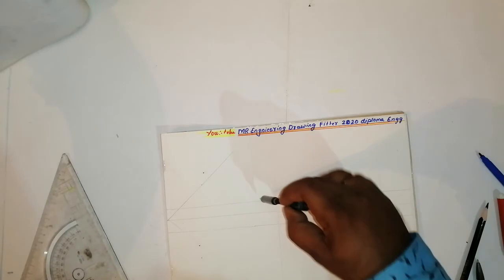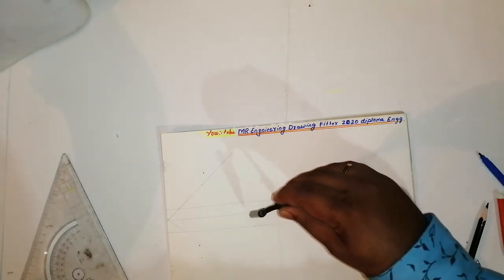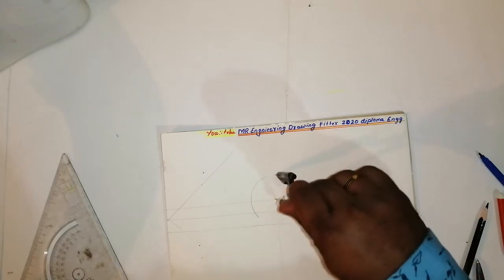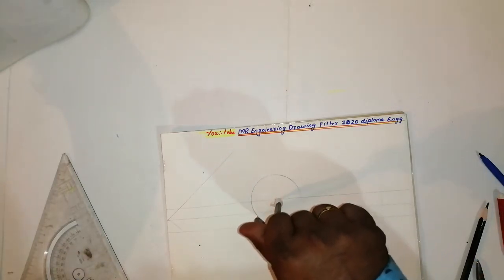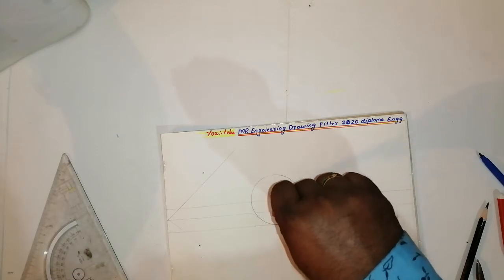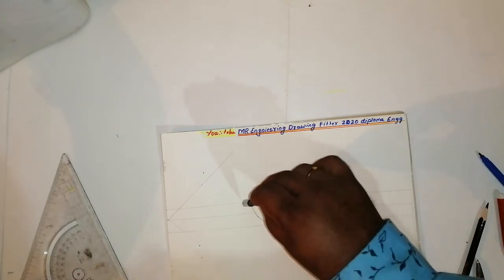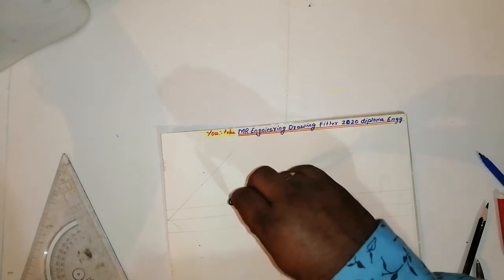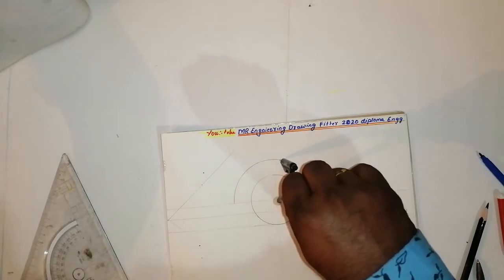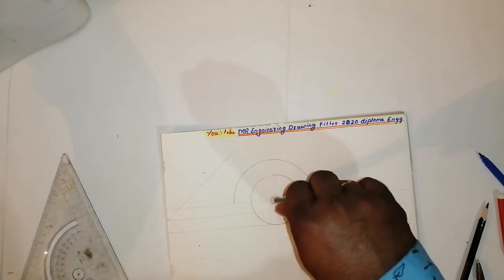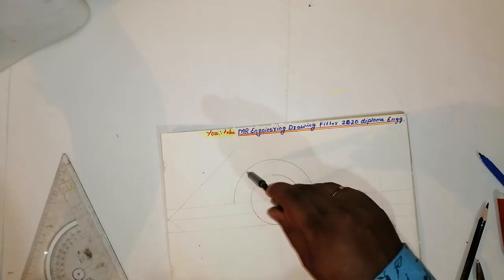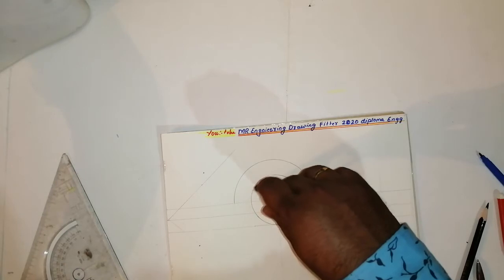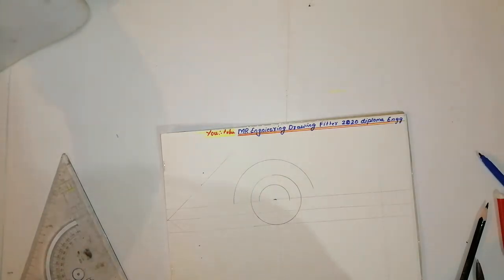Just we want to take a protractor head. In the protractor head, you take one of the circles like this. After that, one more extension circle like this.